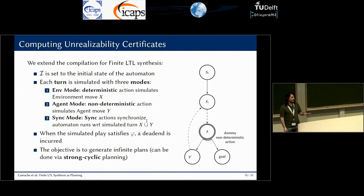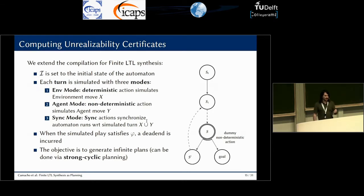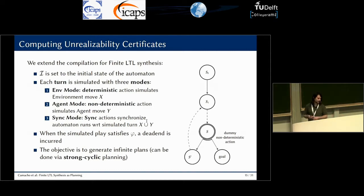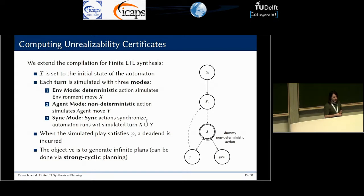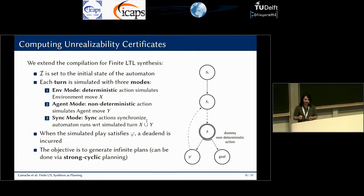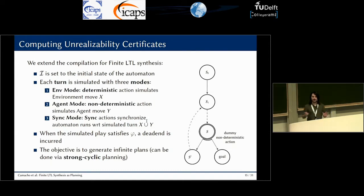The high-level details of the unrealizability compilation still simulate turn-taking between players using different modes. The difference is that the environment mode is simulated with a deterministic action, and the agent mode is simulated with a non-deterministic action, because the environment's move is no longer controllable. A synchronization mode synchronizes the automaton state. This FOND planning problem has two interesting properties: each simulated play must be such that the automaton runs reach accepting states, and we need to generate infinite plans — but we know how to handle that.